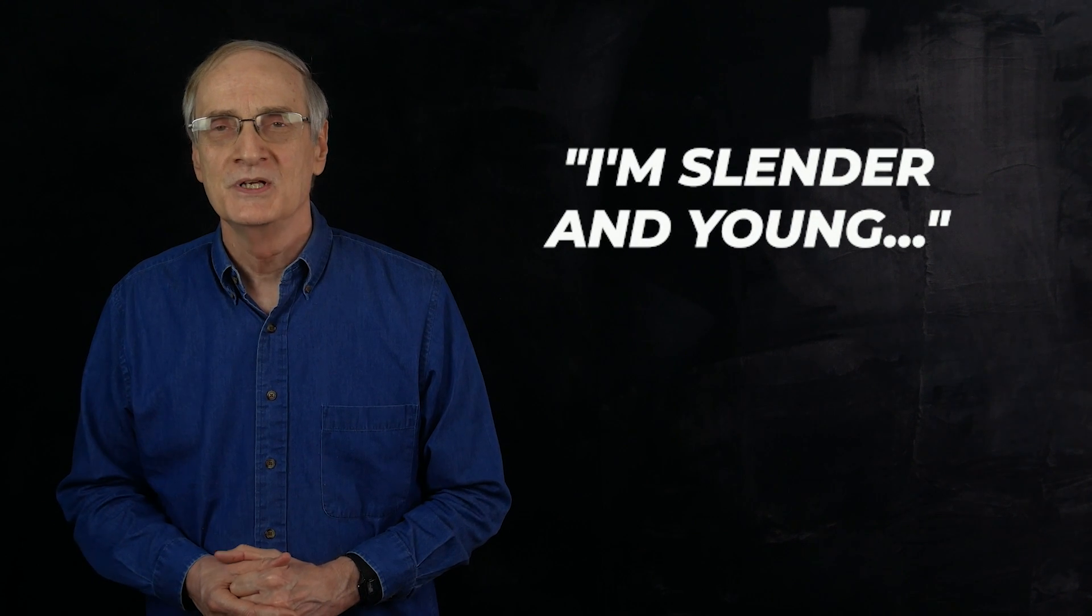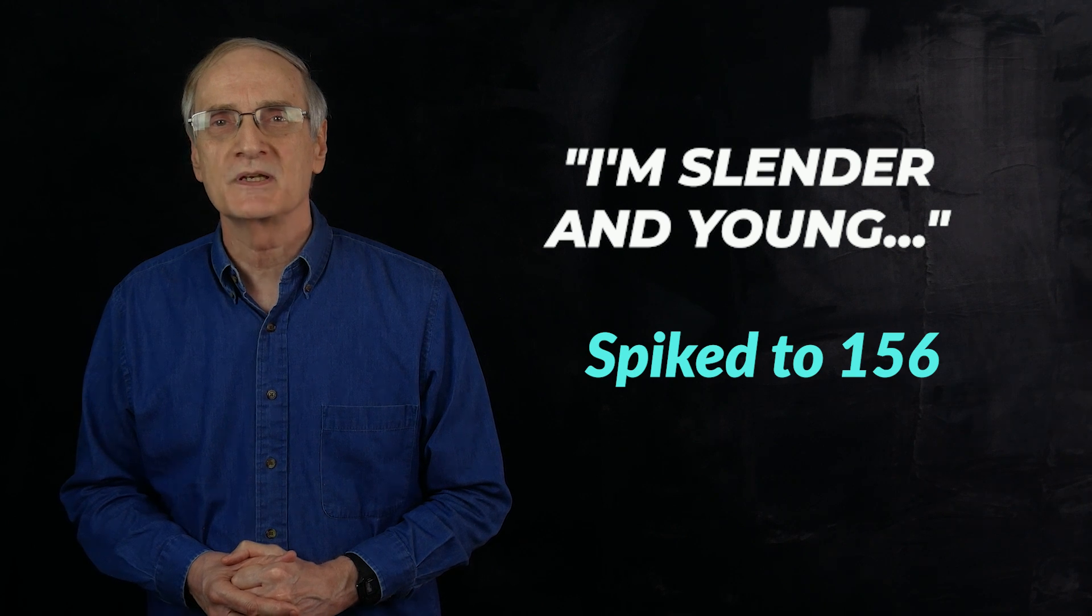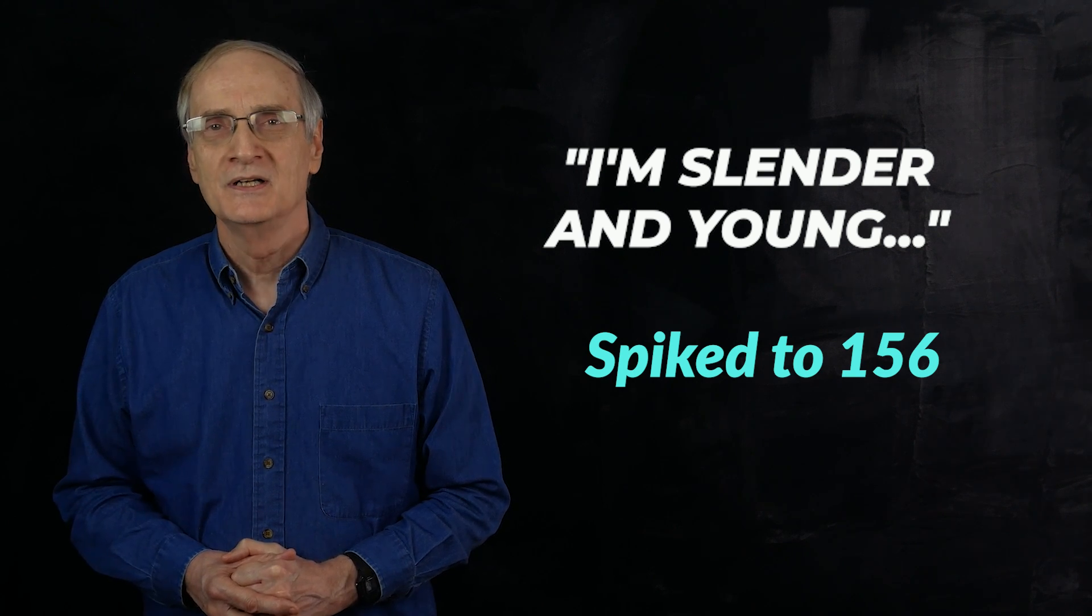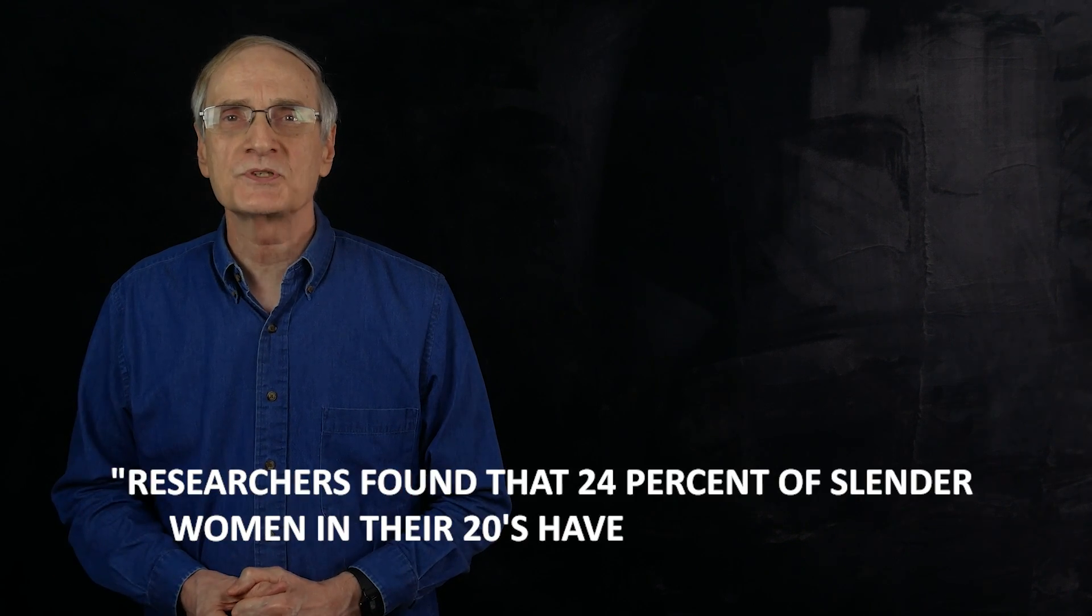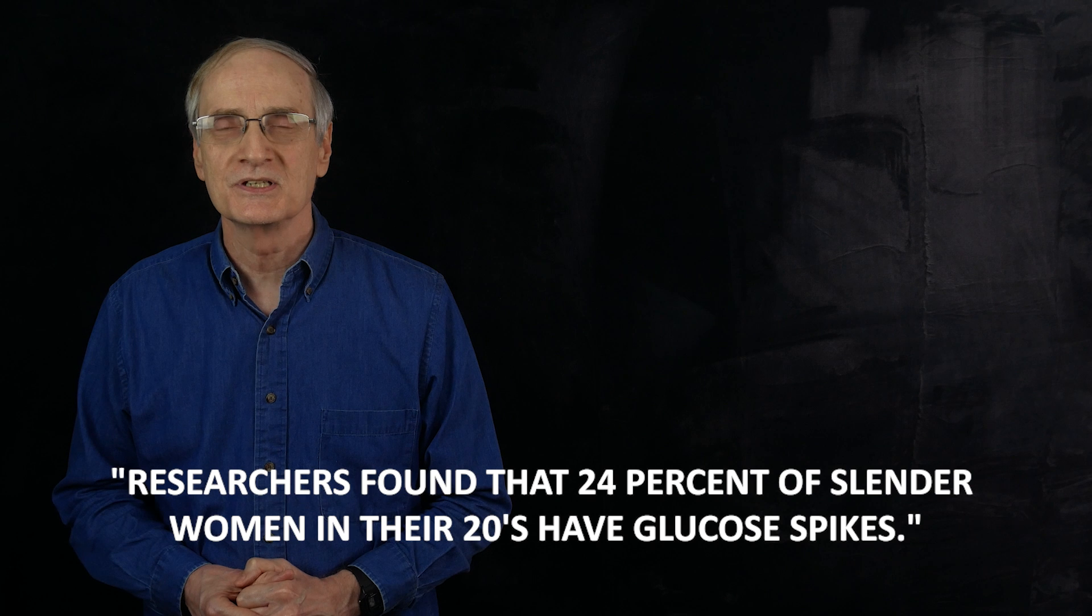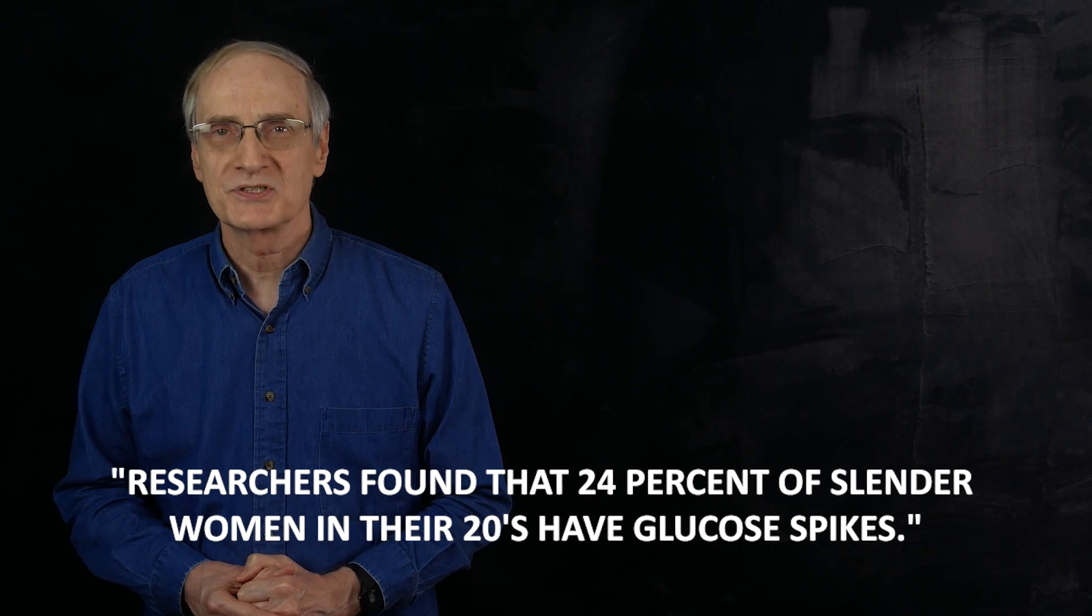One important point they make in this video is, it would be a great mistake to believe that glucose spikes are only a problem for middle-aged people who are obese. They shared some tests they did with four slender young ladies in their 20s. They were given a glucose tolerance test. Before the test, one said, well, since I'm slender and young, there should be no problem. She spiked to 156 two hours after the sweetened drink and was shocked. Another spiked to 190. And they stated in this video, researchers found that 24% of slender women in their 20s have glucose spikes. Amazing.